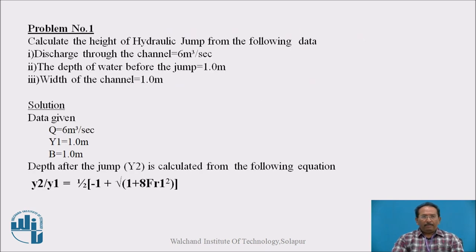Let us see this problem. Calculate the height of hydraulic jump from the following data. The data is given as discharge through the channel, that is 6 meter cube per second. The depth of water before the jump, that is y1, that is 1 meter is given. Width of the channel is also given, that is b is given as 1 meter. First of all read the problem twice and then write down the data given in the problem.